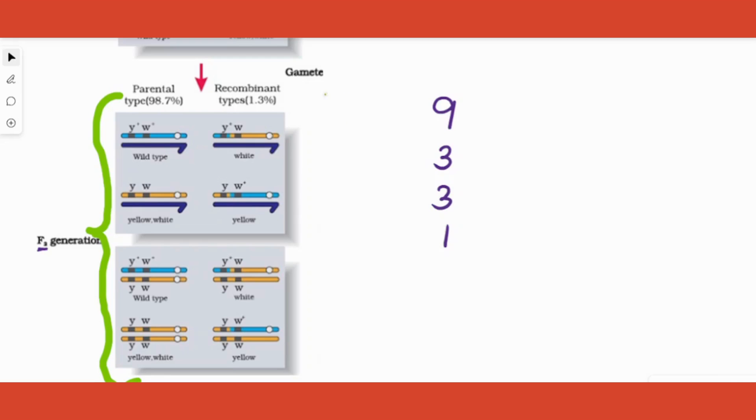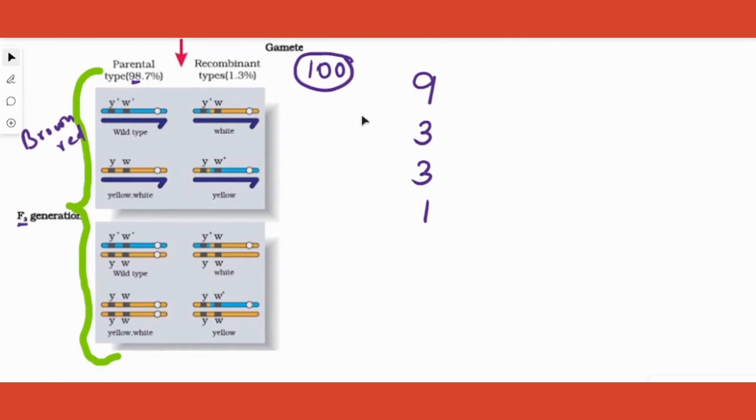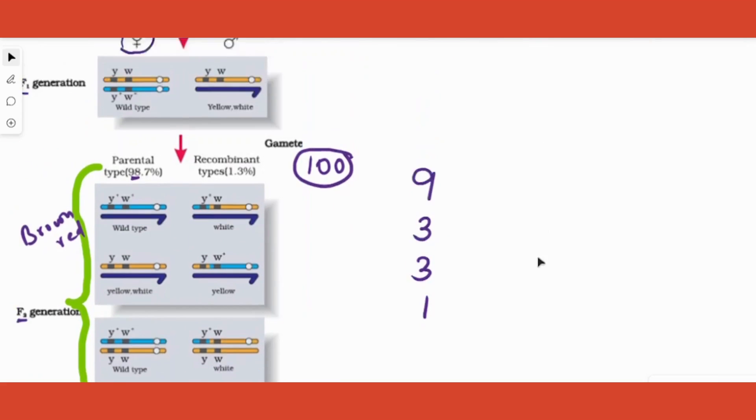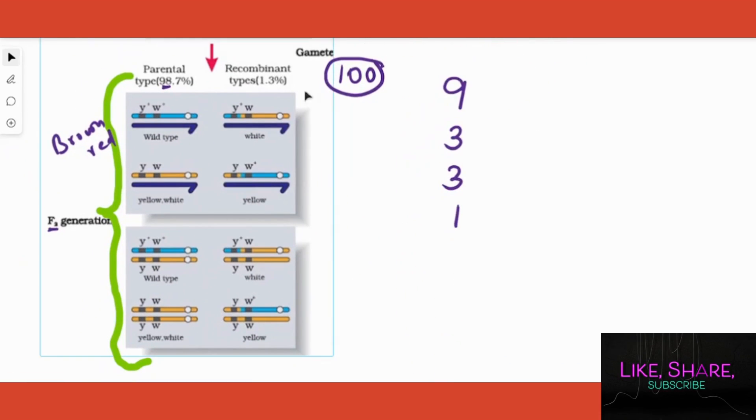However, that's not what happened. Instead, he found that out of 100 progenies produced, 98 of them were wild type and yellow-white. 98 times he got either brown-red or yellow-white, and only two times he got the recombinants - brown-white and yellow-red. It's actually 98.7% parental type. Parental type means whatever you took as parent - 98% of the time he got that, and the rest he got recombinants.